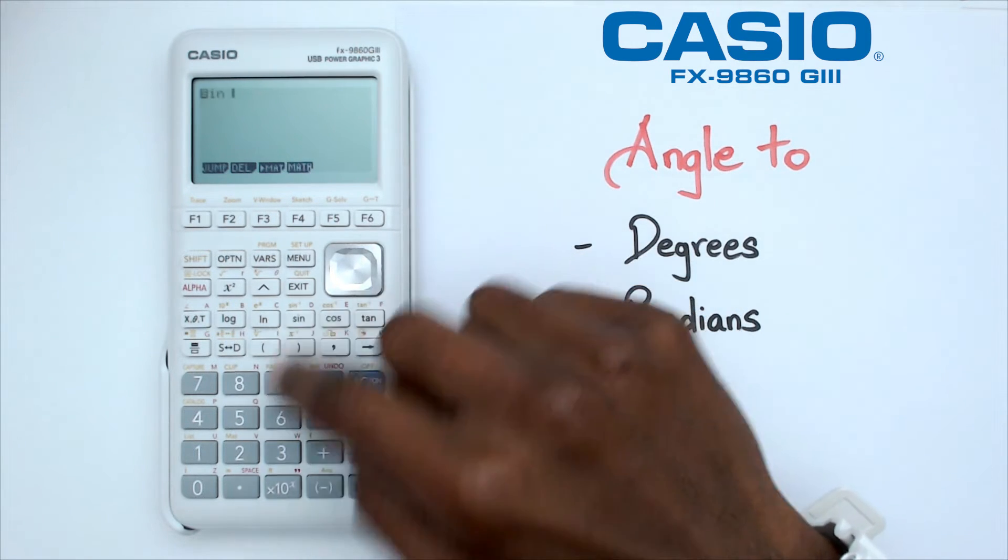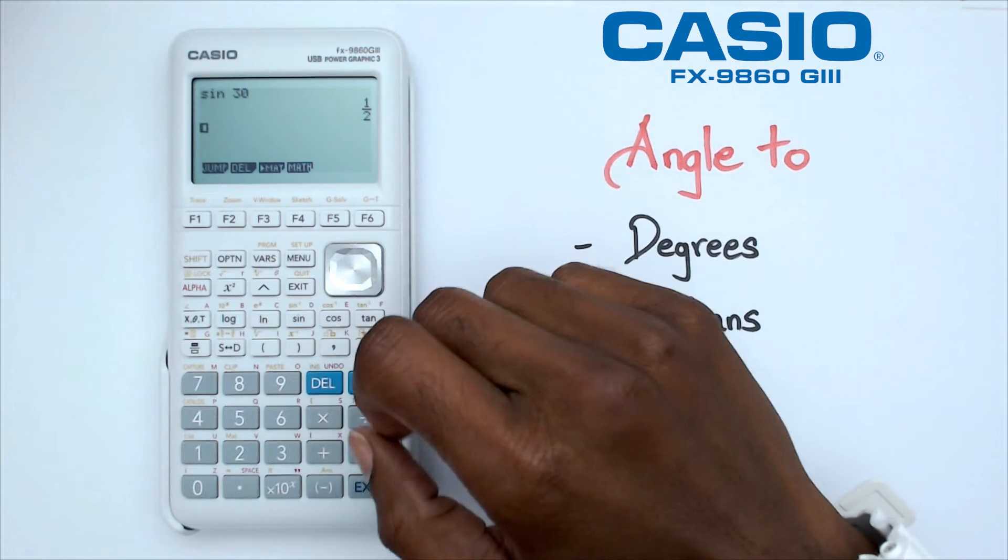So now if I click on something like sine 30, I should get half. There we go. I've got half.